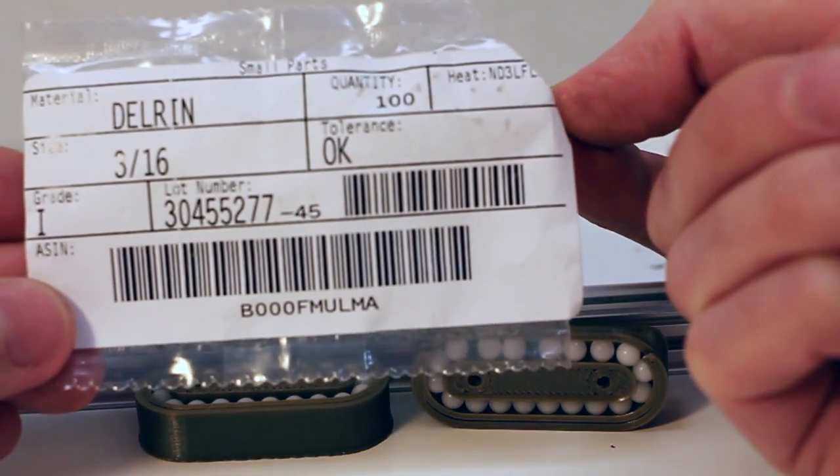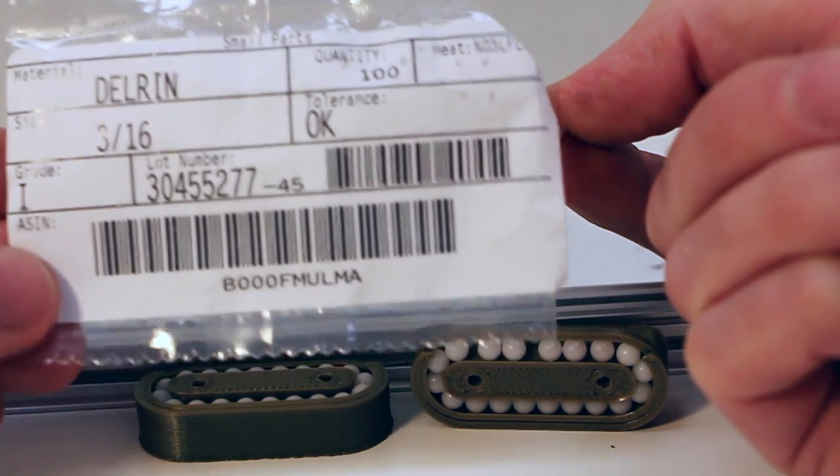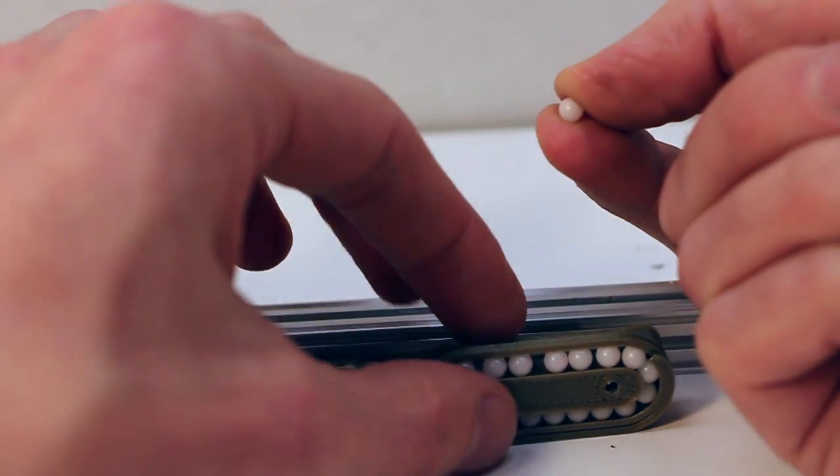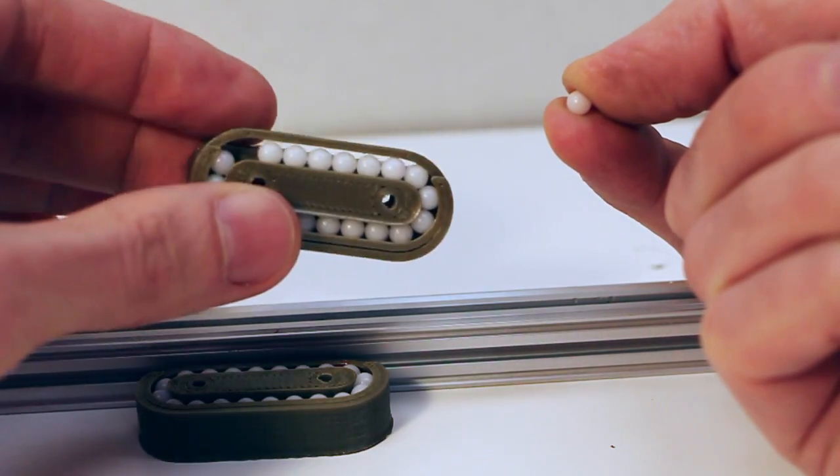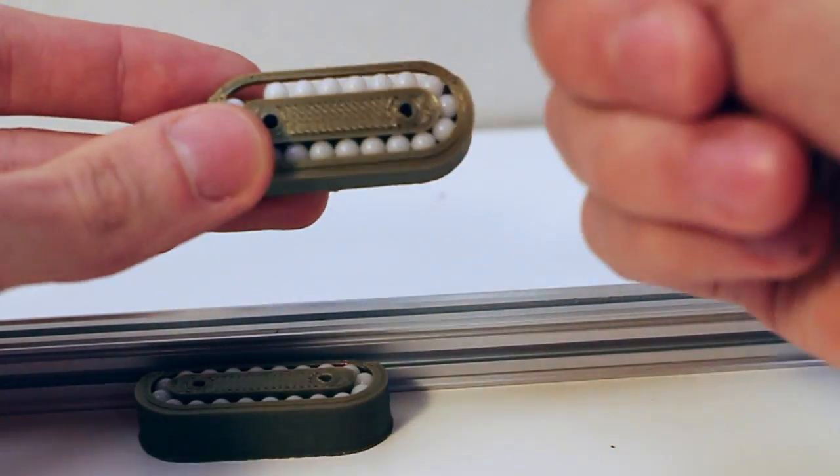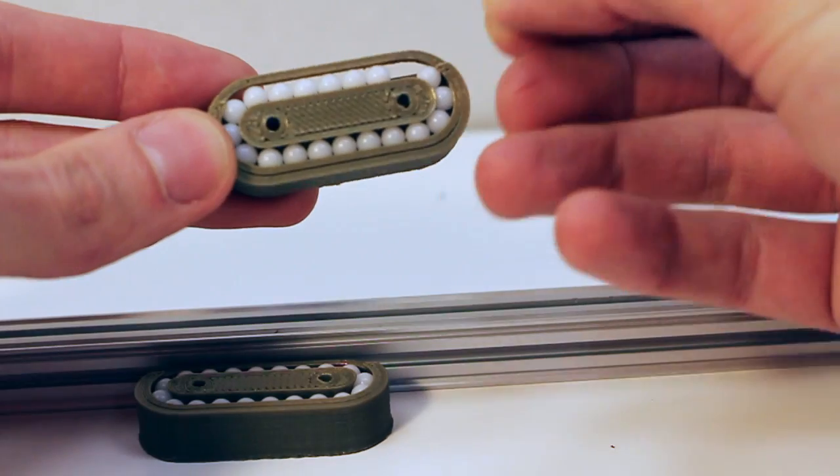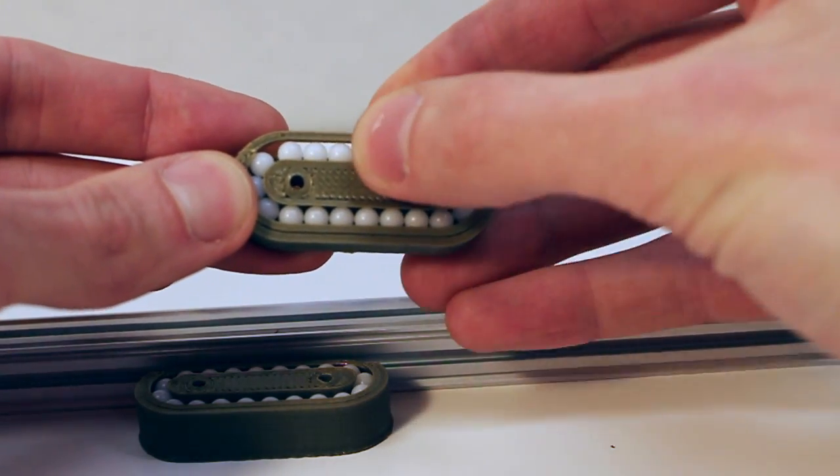A pack of hundred is two or three dollars and I have a single 3D printed part here that holds the recirculating balls and you pop them in like this to load it.